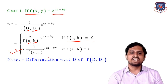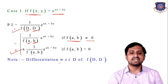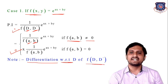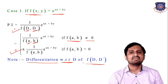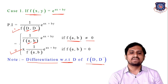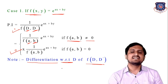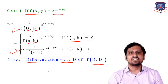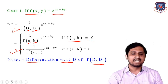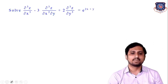If f'(a, b) is also zero, then multiply by x² and use f''(a, b), differentiating again with respect to D and substituting D = a, D' = b. Let's now solve the first example for this case.